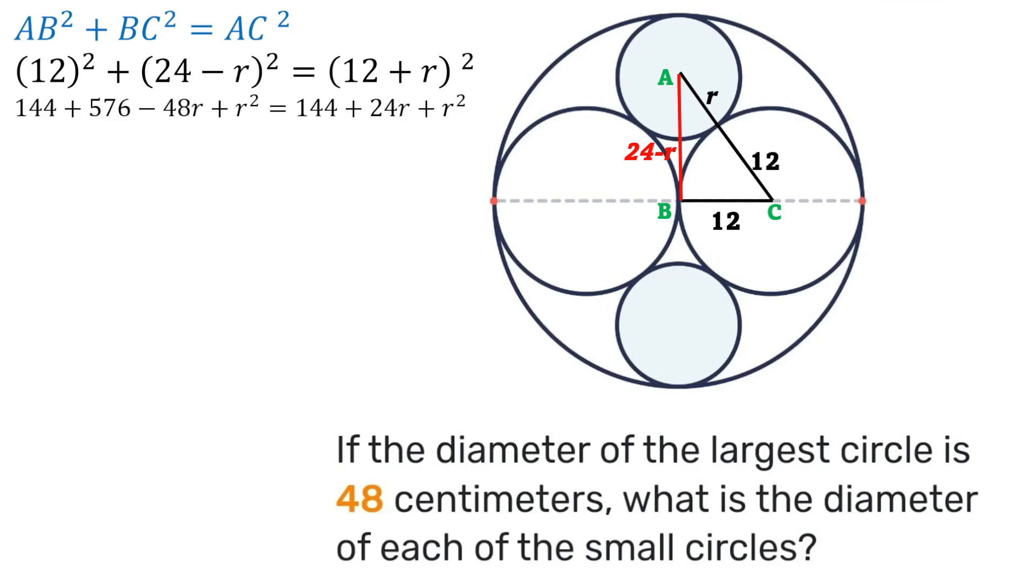Next we notice that we're adding 144 on both sides so we can cancel those, and the same thing goes for the r squared. So we're left with 576 minus 48r is equal to 24r. Transposing we'll have 576 is equal to 24r plus 48r which gives us 72r. Therefore r will be 576 divided by 72 which gives us 8.